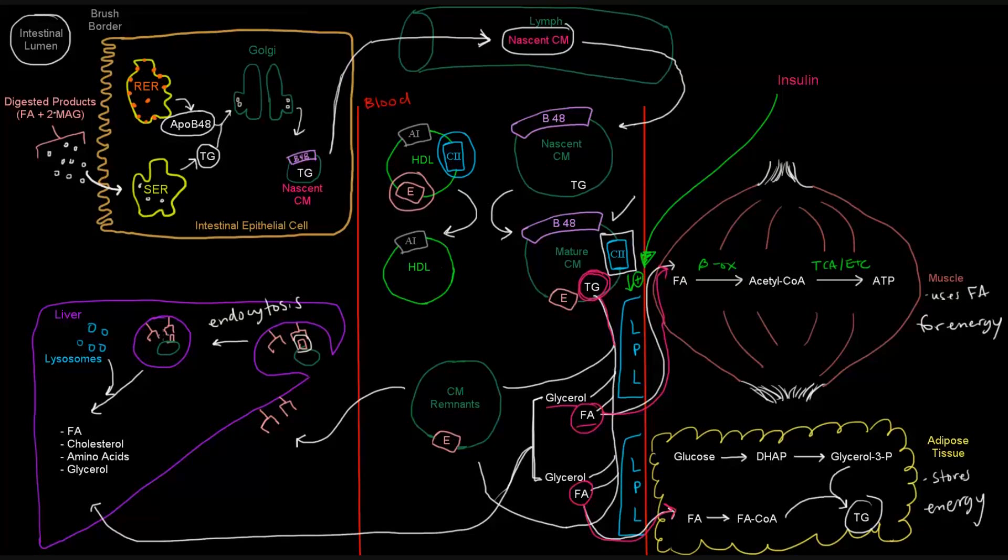And once it's taken up by the liver, lysosomes will then fuse with it and basically break it up into all its different components. And so we'll have fatty acids, cholesterol, amino acids, glycerol, all these different things to be recycled by the liver. So that's kind of what chylomicrons do.